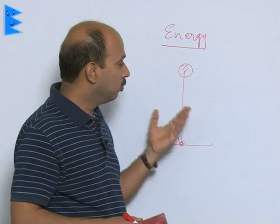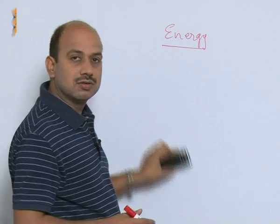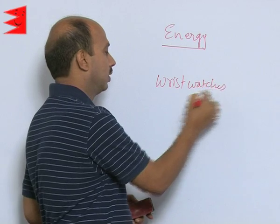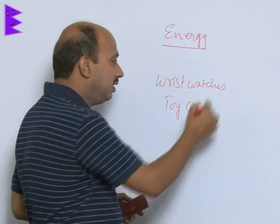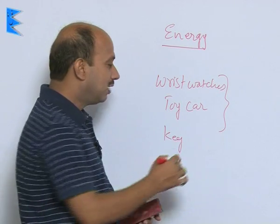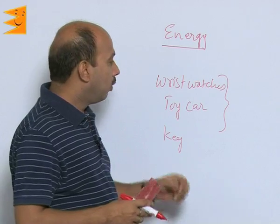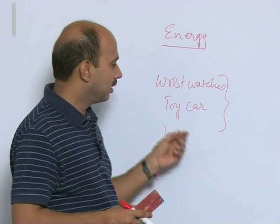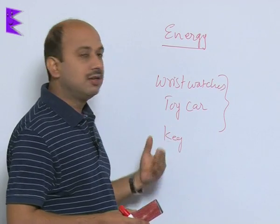By this way also we can do some work. Another part is wrist watches and toy cars. In these cases, there is a key which has to be wound. As you wind the key, by winding the key we store energy. When the energy is stored inside the car and the car is allowed to move, it moves for a certain distance. It means energy is moving the car.